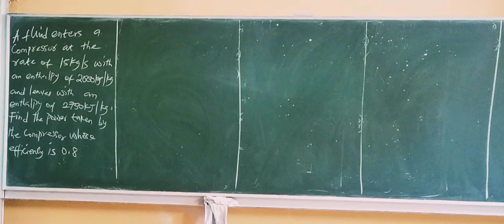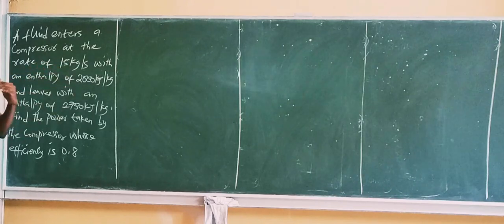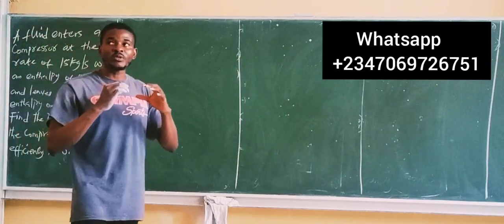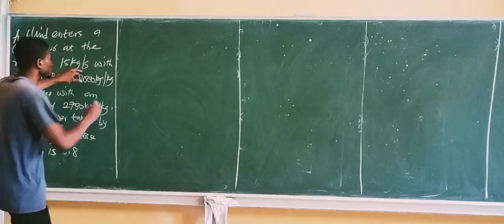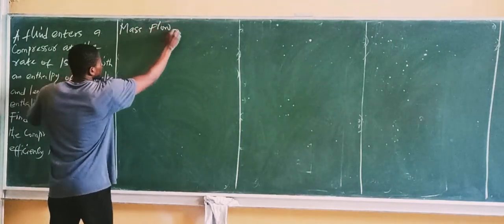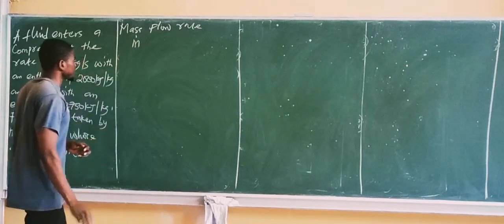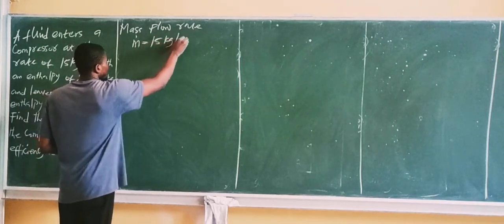So first, let us identify the given parameters. The fluid enters a compressor at a certain rate — this is called the mass flow rate. Mass flow rate simply means mass divided by time, the mass of fluid that flows within a given time. It is given in kg per second. We use a dot notation to represent mass flow rate, which is given as 15 kg per second.